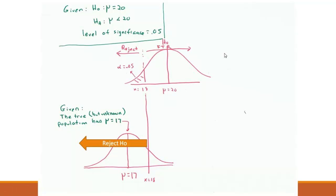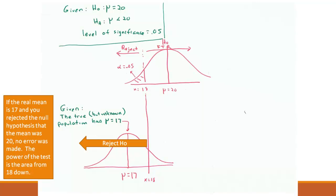So again, we're rejecting HO if we get less than 18 and if the real mean is 17 and we rejected HO, then we didn't make an error. That in fact is called the power of the test. So the area on this curve that's less than 18 is the power of the test.